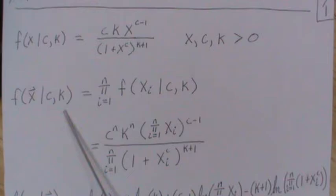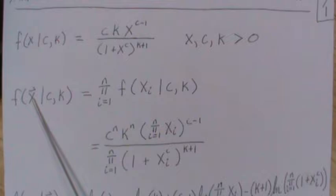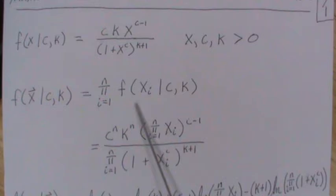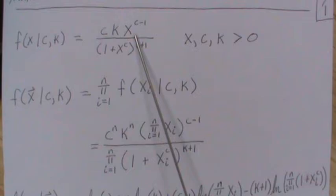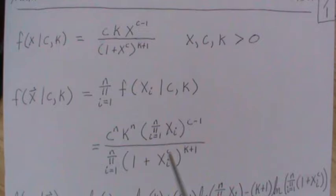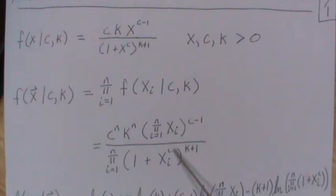When doing maximum likelihood estimation, we need a sample. So we need to look at the joint density. This is X a vector, so X1, X2, etc. It's just the product of the independent densities. And then this becomes C to the N, K to the N, X1 to the C minus 1, X2 times C raised to the C minus 1. The bottom is the product of 1 plus Xi raised to the C, all raised to the K plus 1.